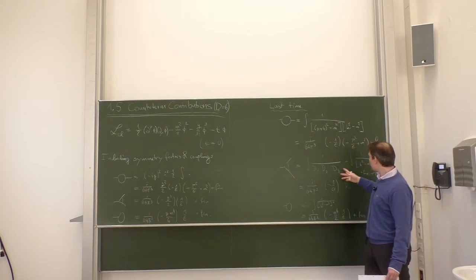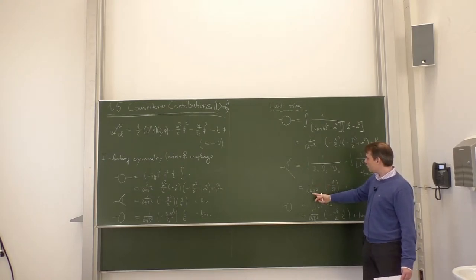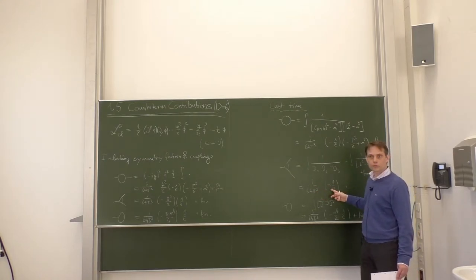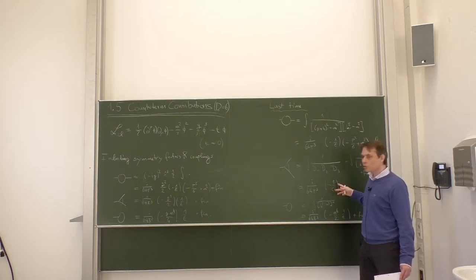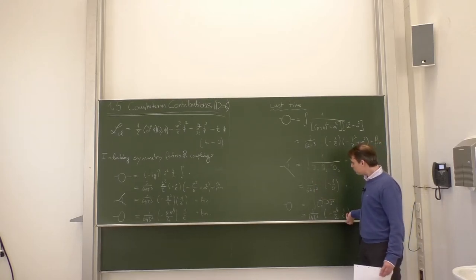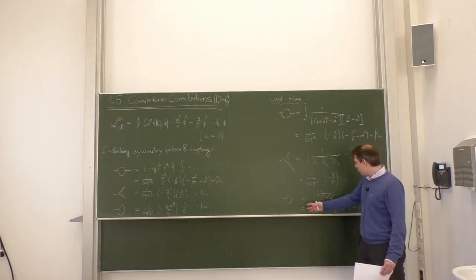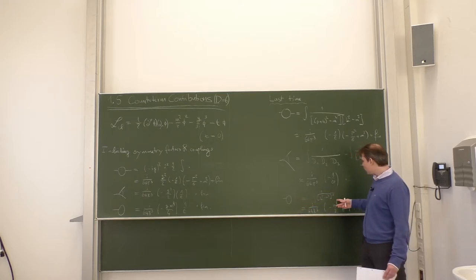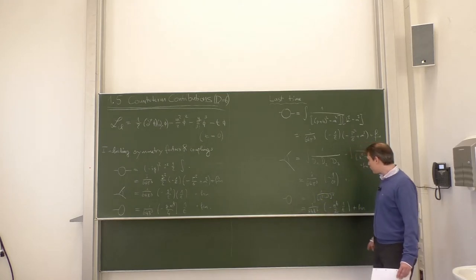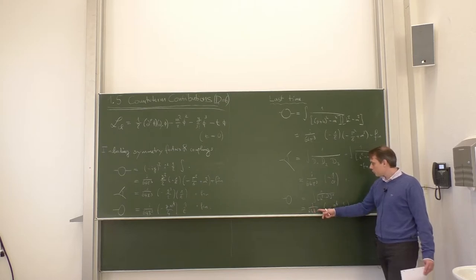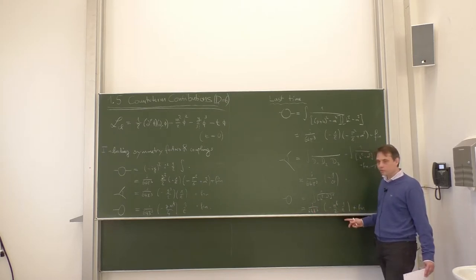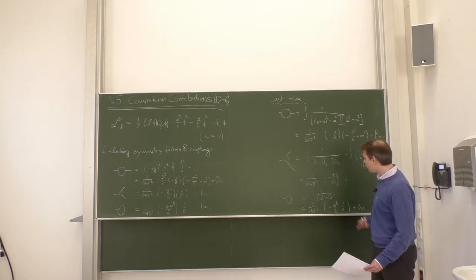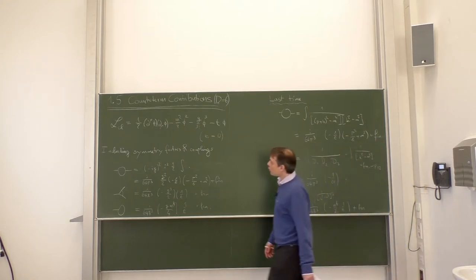This diagram gives a divergence which is i over 64π³ times minus 2/ε times nothing else — so this is a constant in terms of the momentum and mass of the theory, dimensionless. And here we get a tadpole one-loop diagram: i over 64π³ times mass to the fourth, so a polynomial of fourth order in the mass times 1/ε.